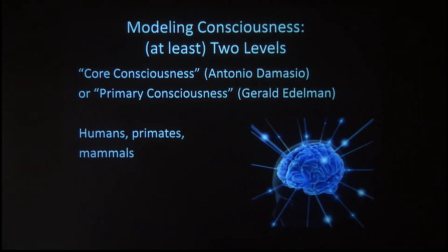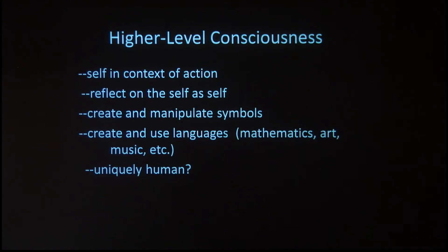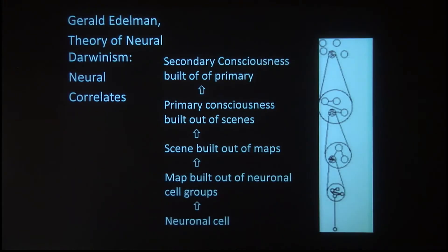Now we've introduced what the cognitive non-conscious might be. Let's change to the other mode: conscious thought. Everyone who writes about consciousness defines at least two different levels. One is core or primary consciousness — this mode of awareness is shared among humans, primates, and many mammals. But in addition, there's higher-level consciousness, which, if not unique to humans, is certainly more developed in humans than any other species. Higher consciousness includes the ability to conceptualize the self, to reflect on the self as a self, and of course this leads to language and manipulation of symbols.